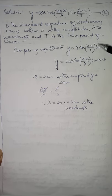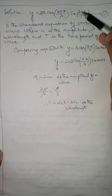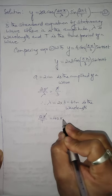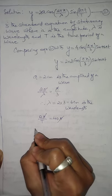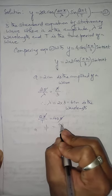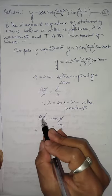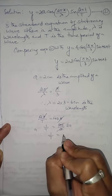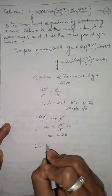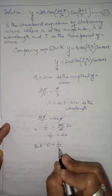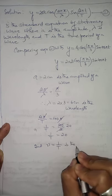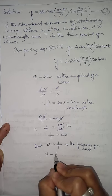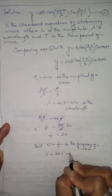Similarly, comparing the sine terms, 2π/T equals 40π. The π's cancel, giving 2/T = 40, so 1/T = 20. Since 1/T is frequency (ν), the frequency of the wave is 20 per second, or 20 hertz.